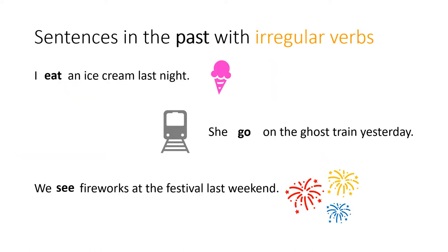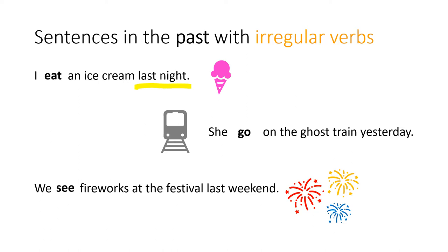So let's look at some example sentences with irregular verbs. The first sentence says, "I eat an ice cream last night." Well, if we are talking about last night, we know this is in the past, so we can't say eat. We have to say ate. I ate an ice cream last night.